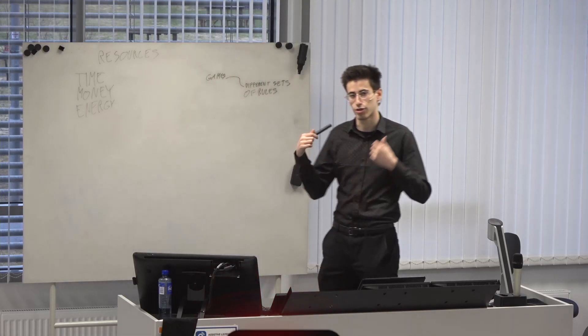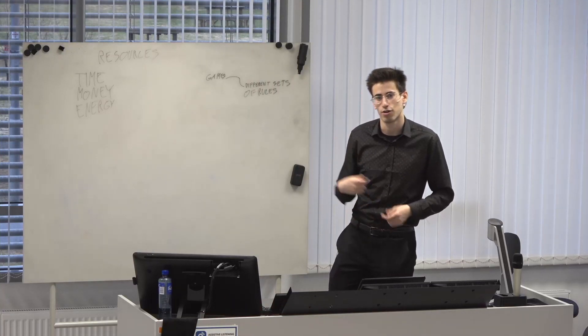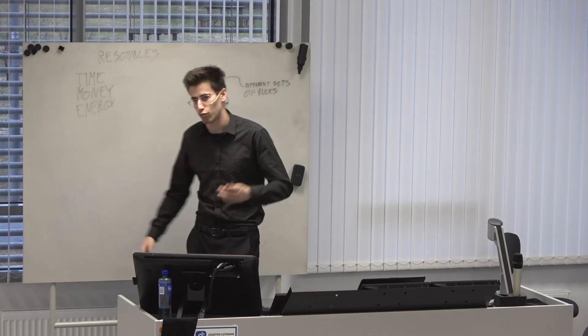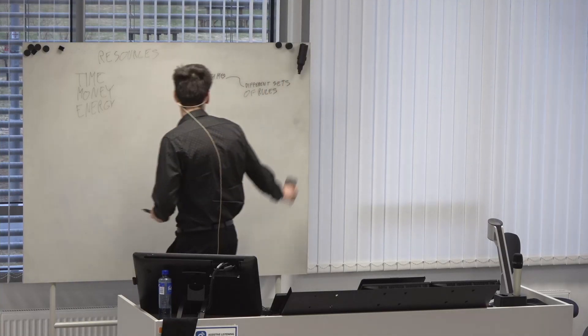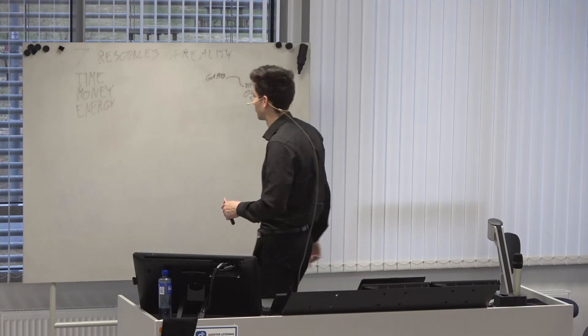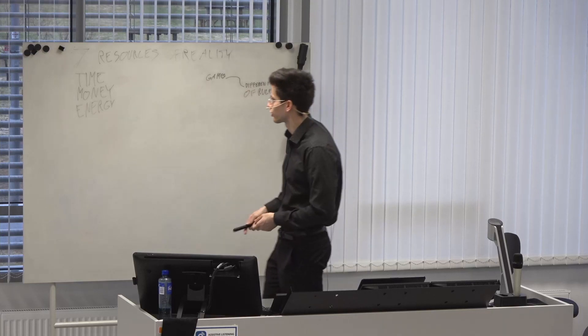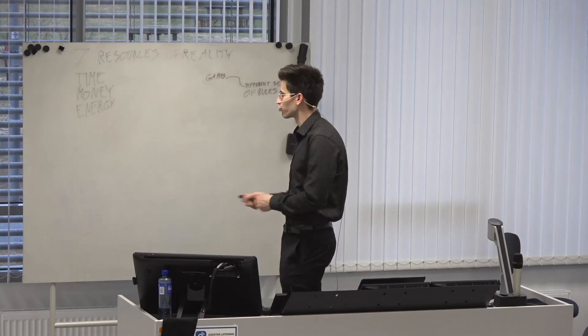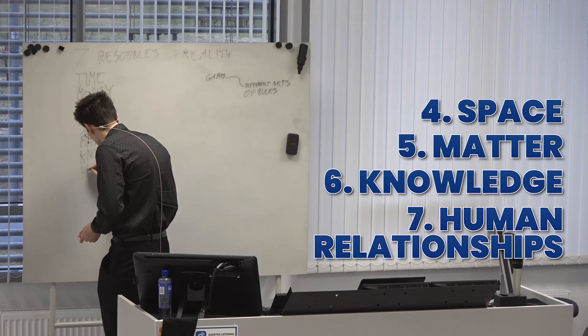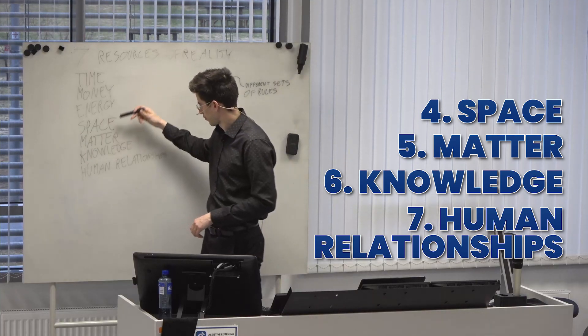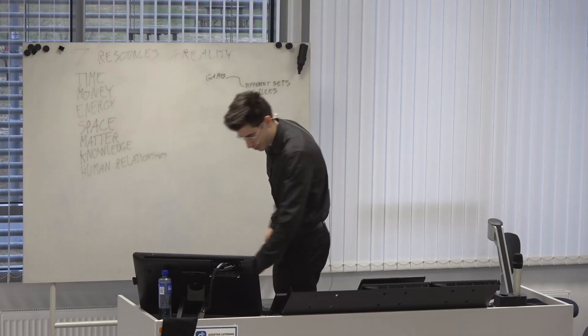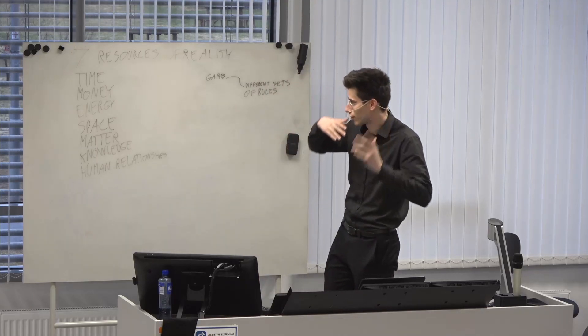Resources are something that you can trade in exchange for another resource. The seven resources of reality that I came up with essentially build on top of these three. The other resources I add to it are space, matter, knowledge, and human relationships. We have one, two, three, four, five, six, seven. These are the seven resources of reality - essentially the seven things that we can trade in exchange for the other ones.